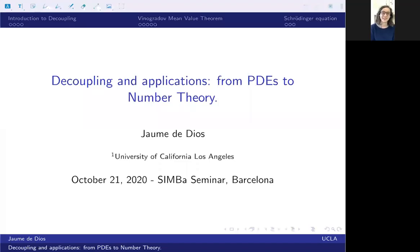Again, in this second seminar, our speaker today is Jaume Delios. Jaume studied physics and maths at UAB, he finished three years ago. Then he moved to Zurich to do his master's at ETH. And now since September 2018, he's a PhD student at UCLA under the supervision of Terence Tao.